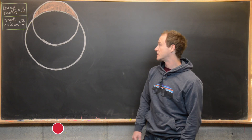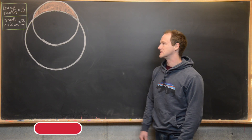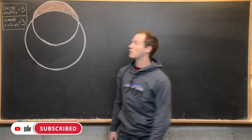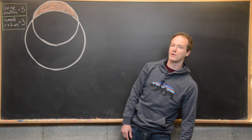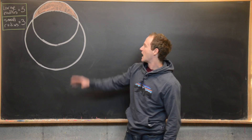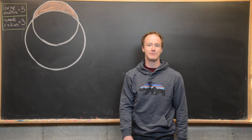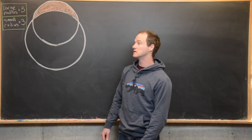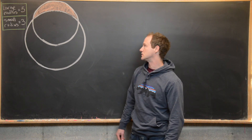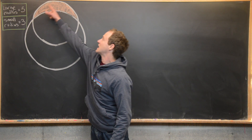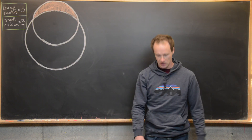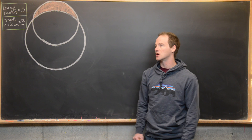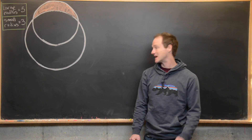Here we're going to find the area of a region in the plane known as a lune. We've got two circles, one with a radius of five and the other with a radius of three, and they're overlapping like in the picture. Our goal is to find the area of the lune defined by these two circles, which I've shaded in orange. We're going to do this by putting it in the Cartesian coordinate plane and then setting up an integral.